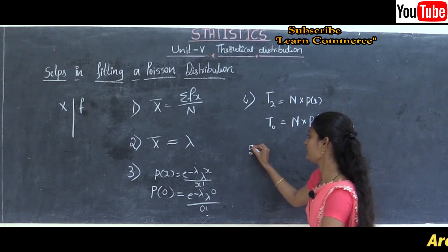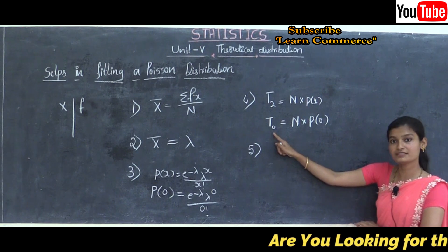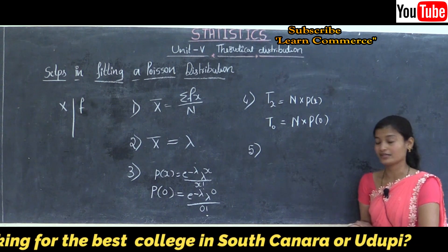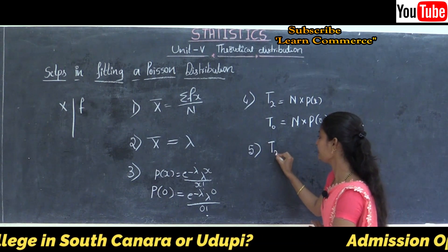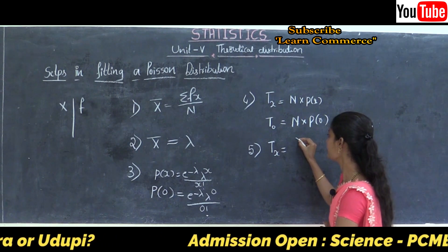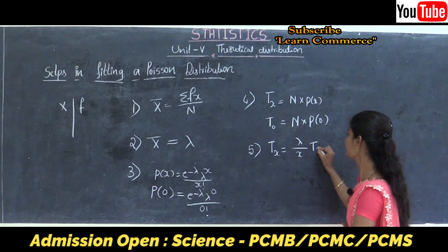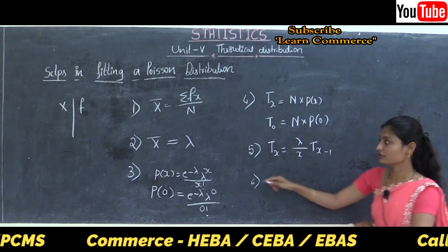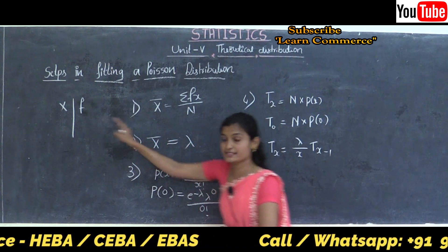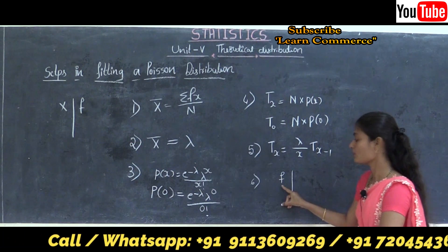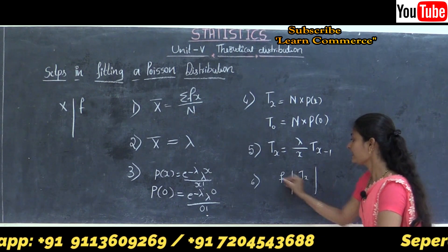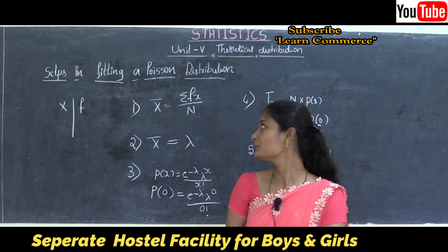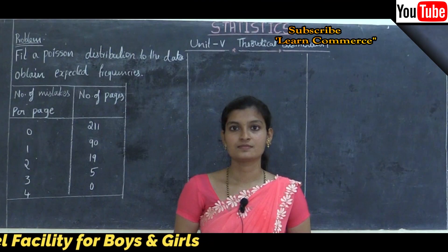Step 5: once the first term of the theoretical frequency is found, the remaining frequencies are obtained using the recurrence relation formula: T(X) = (λ / X) × T(X−1). Step 6: write both the observed frequency and the theoretical frequency in a table so that comparison can be made easily. These are the important steps to fit a Poisson distribution.